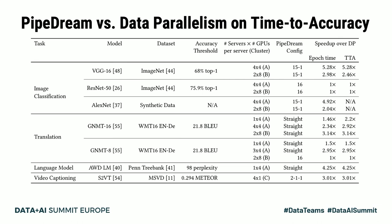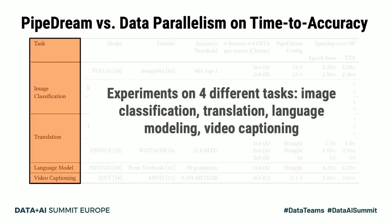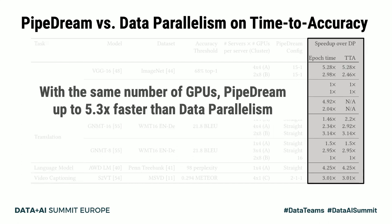We ran experiments on a number of other tasks as well — image classification, translation, language modeling, and video captioning. Using the same number of GPUs, Pipedream is up to 5.3x faster than data parallelism on the time-to-accuracy metric.